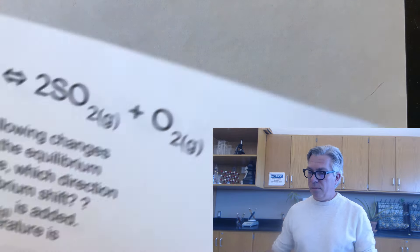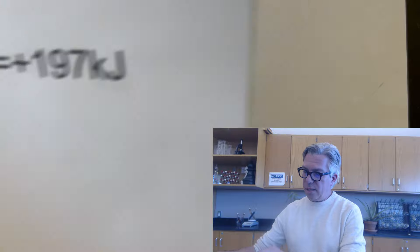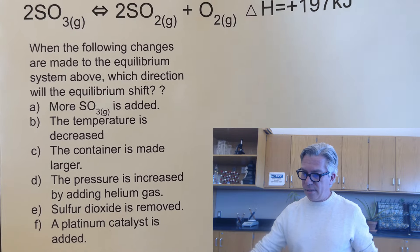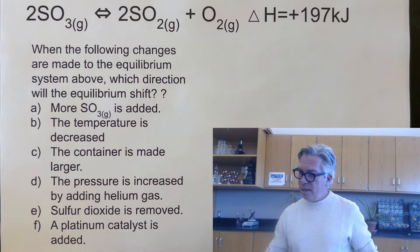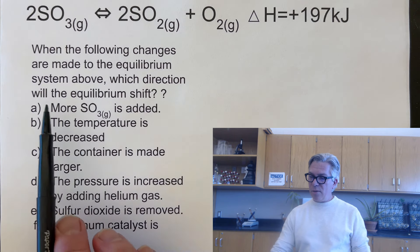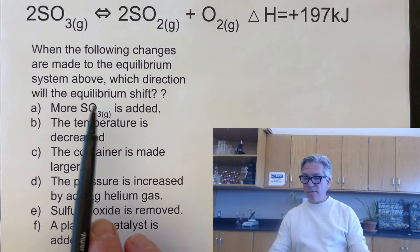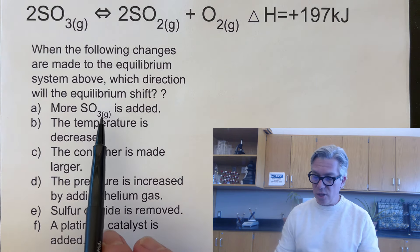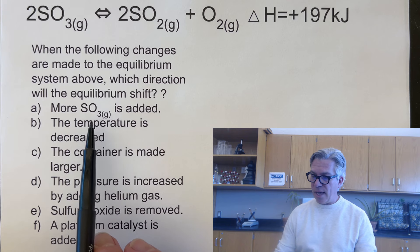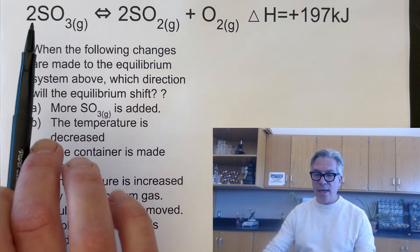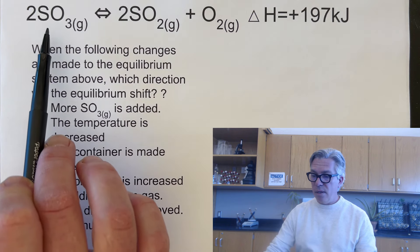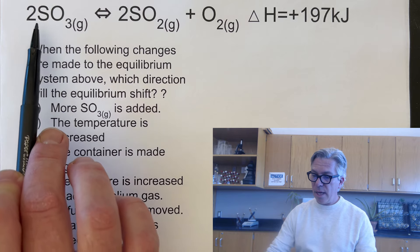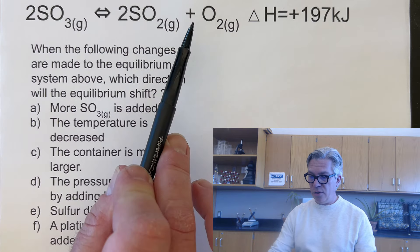Let's do some sample questions. When the following changes are made to the equilibrium system, which direction will the equilibrium shift? First: more SO₃ is added — that's adding a reactant, so the equilibrium will shift to the right.